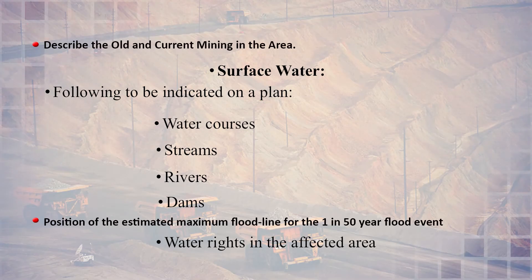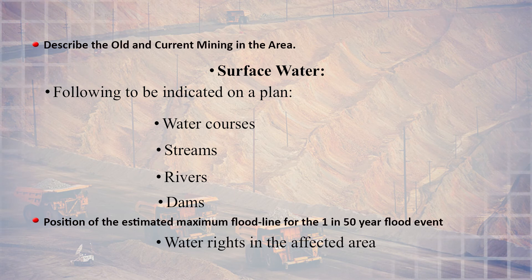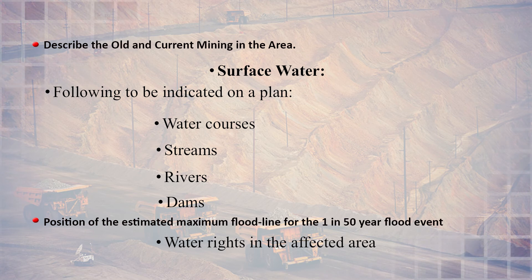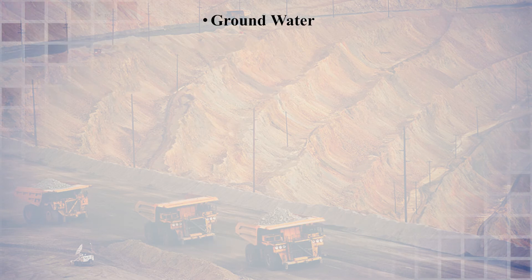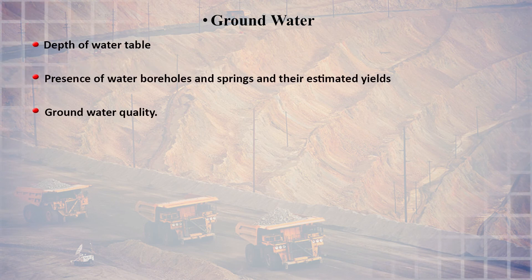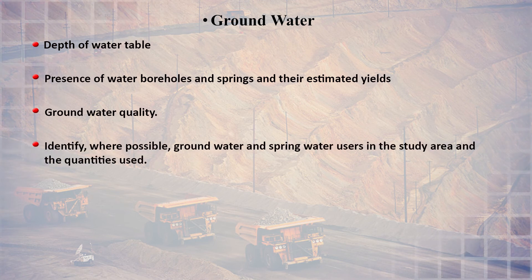Old and current mining in the area must also be evaluated. Surface water must be indicated — including water courses, rivers, streams, and dams. Water rights in the affected area and the position of the maximum flood line — for example in a 50-year flood event — need to be known, including whether the area is flood-prone. For groundwater, the depth of the water table, presence of boreholes, springs, estimated yield and productivity, and groundwater quality must all be described.